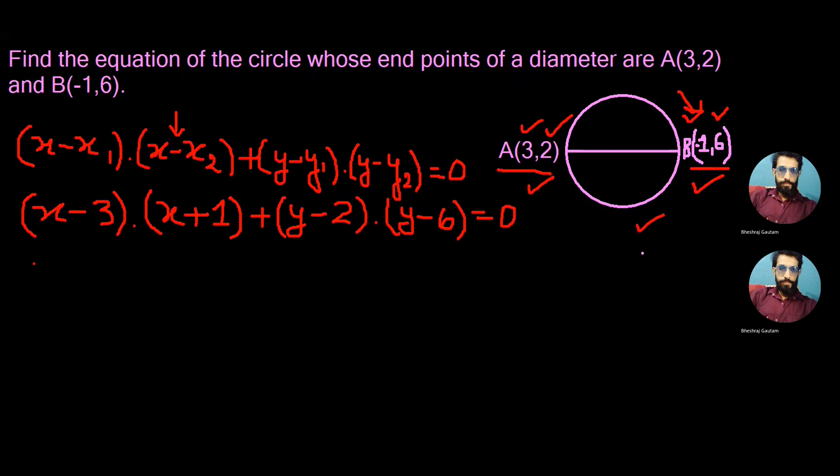Simplifying this equation we have x². When we multiply x and x we get x². Similarly, multiplying x and plus 1 gives plus x. When we multiply -3 and x we get -3x, and when -3 and 1 are multiplied we get -3.